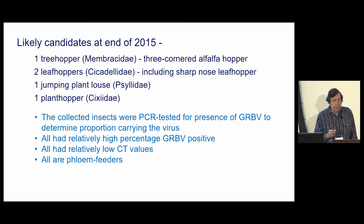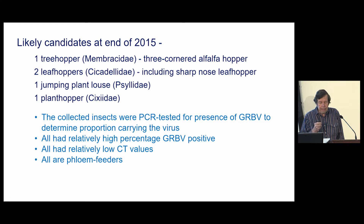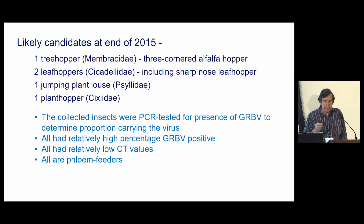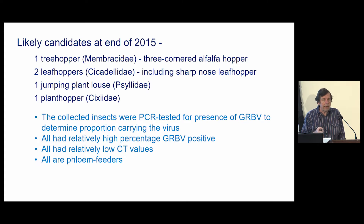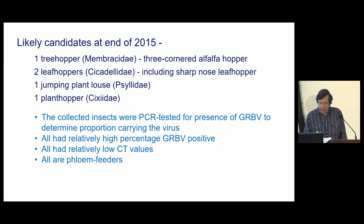By the end of 2015 we had five insects that we considered possible candidates because they had relatively high percentages of grape red blotch virus present when we looked at the bodies of the insects. They also had relatively low CT values, which would indicate a higher virus load, and all of them were phloem feeders.